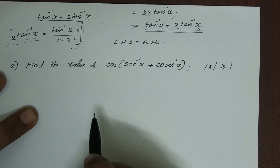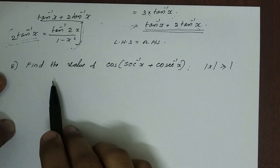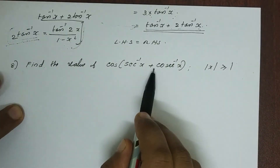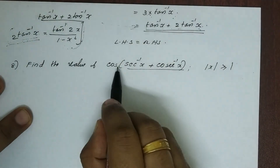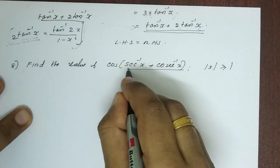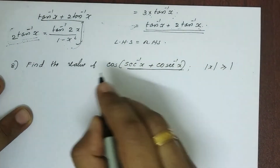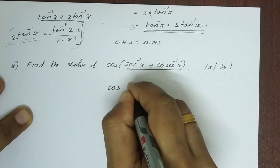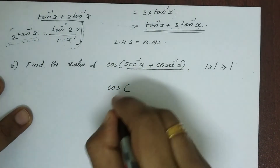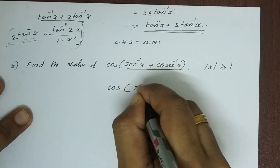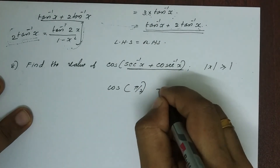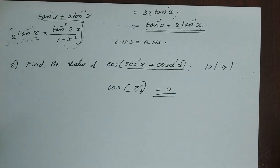Next problem. Find the value of cos of sec inverse x plus cosec inverse x. Now the result sec inverse x plus cosec inverse x equals pi by 2, so cos of pi by 2 equals 0. Answer is 0.